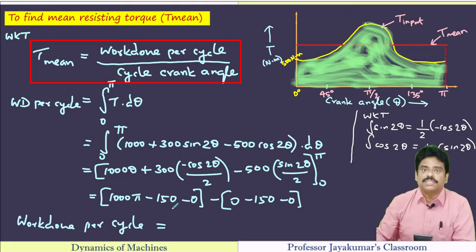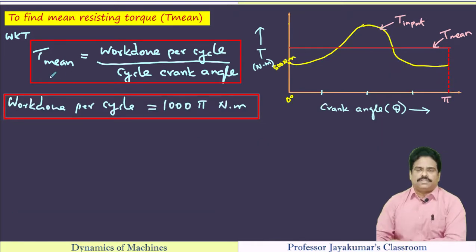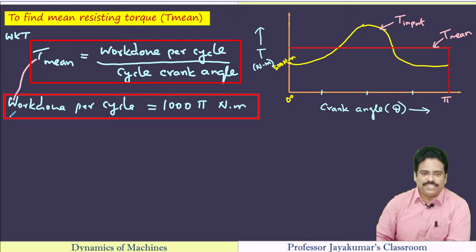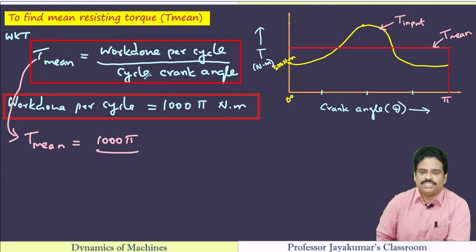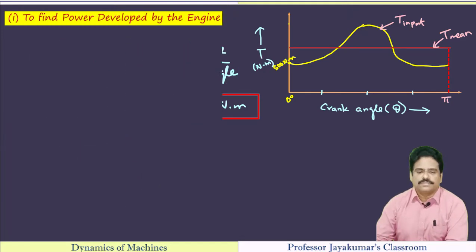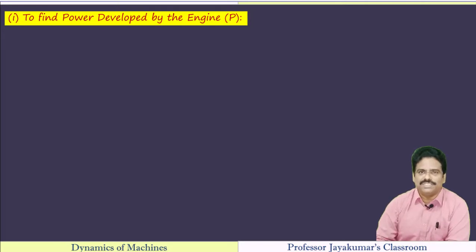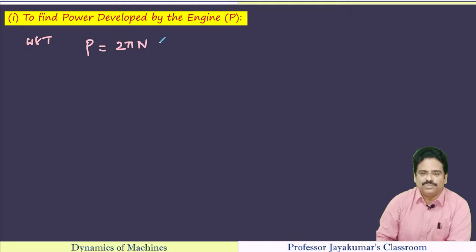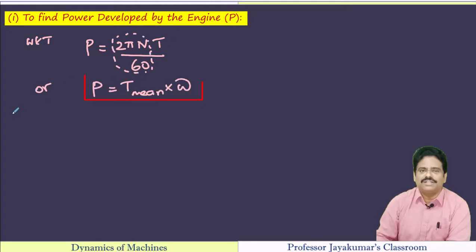By substitution, we get the work done per cycle as 1000π Newton meters. Now we can find T_mean: work done per cycle divided by the cycle crank angle π radians gives T_mean equals 1000 Newton meters. The problem also asks us to determine power developed by the engine. Power equals 2πNT divided by 60, or equivalently T_mean multiplied by omega.